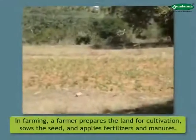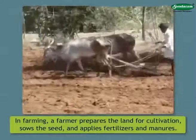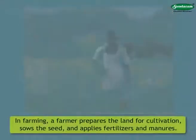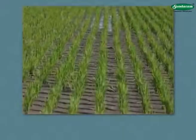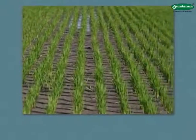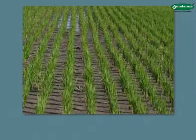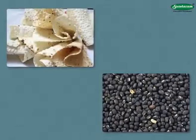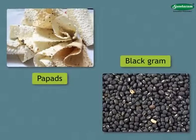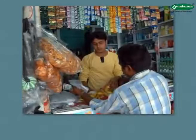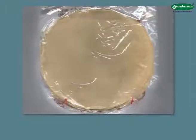Farming. In farming, a farmer prepares the land for cultivation, sows the seed and applies fertilizers and manures. The sprouting of the seed and the growth of the crop take place naturally. The farmer takes different crops depending on the fertility of the land. For preparing items like papads, we need to process black gram or urad, which is a farm product. Using it, we produce an altogether new item that is more useful. In a grocery shop, nothing is produced or processed but items like papads are made available for sale.